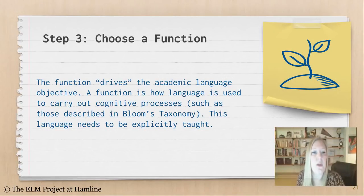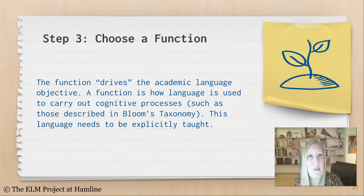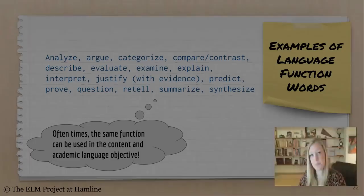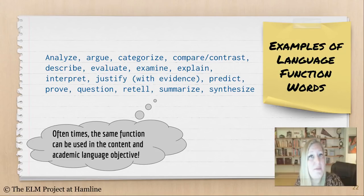Step three: choose a function. The function drives the academic language objective. A function is how language is used to carry out cognitive processes — you may have heard of these in Bloom's Taxonomy. This language needs to be explicitly taught. Some examples of language function words are: analyze, argue, categorize, compare and contrast, describe, evaluate.